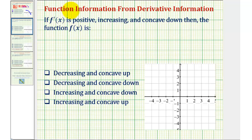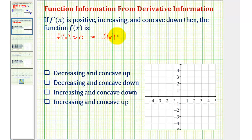And since we're told our first derivative is positive, or f prime of x is greater than zero, this indicates our function f of x must be increasing.